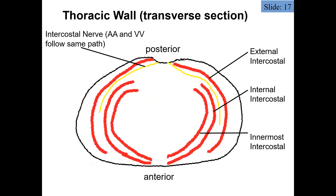Here's another view of the intercostal muscles in cross section, with posterior on one side and anterior on the other. The external fibers are more posteriorly and laterally located and are the most superficial. The internal intercostals are more anterior and medial, sitting between the external and innermost layers. The innermost intercostals are also anterior and medially located, forming the deepest layer.